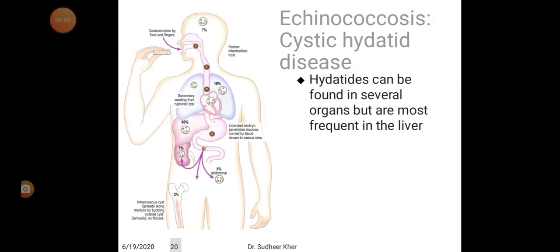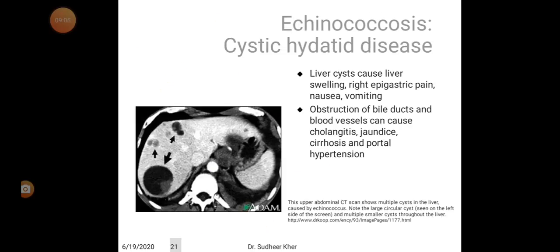Liver cysts cause liver swelling, right epigastric pain, nausea, and vomiting. Obstruction of bile ducts and blood vessels can cause cholangitis, jaundice, cirrhosis, and portal hypertension. This CT scan shows the liver containing hydatid cysts.